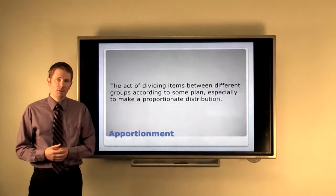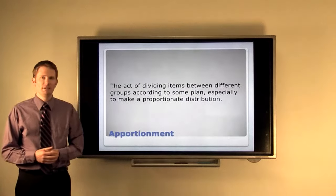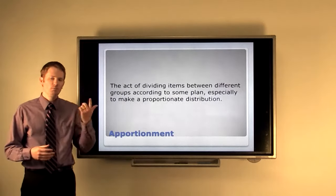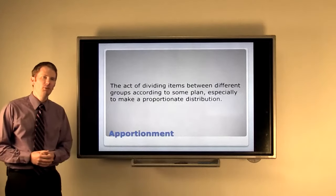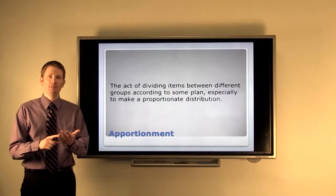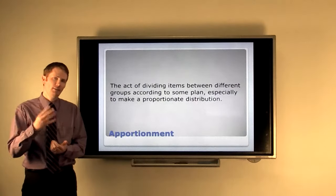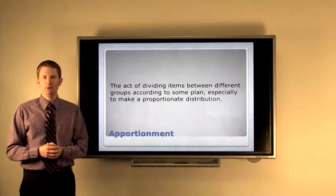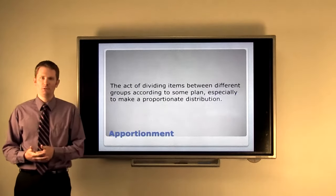For instance, if I walked into your class today and there were 24 students in it, and I had 100 $1 bills, and I wanted to distribute them fairly throughout the class, each of you would get 4, because 4 times 24 gives us 96, and then I'd have 4 $1 bills left over. And what do we do with the leftovers? That's what apportionment deals with.